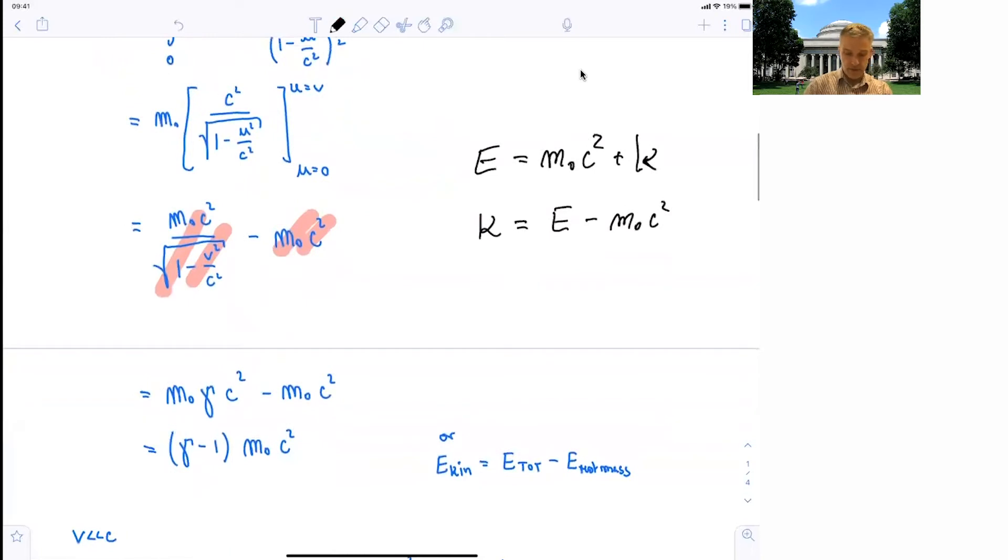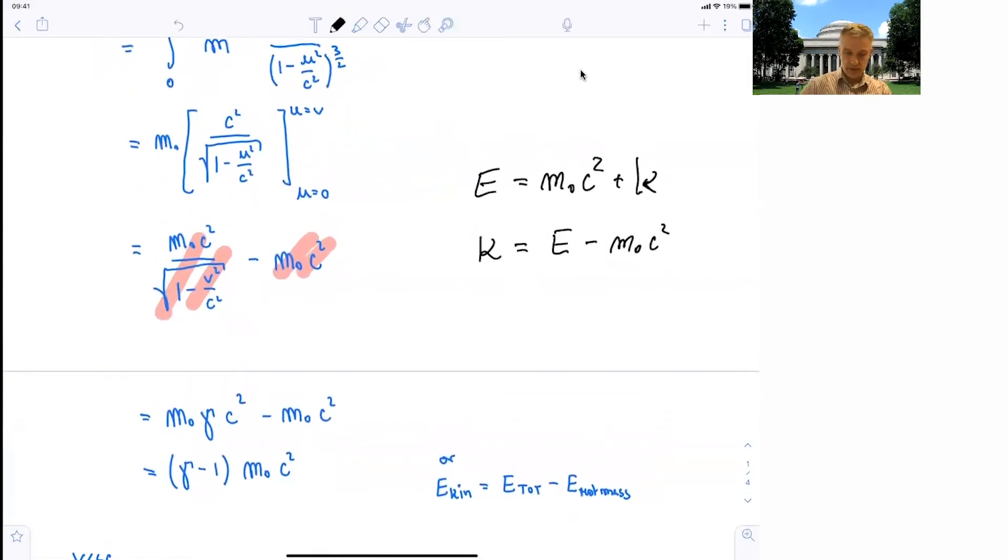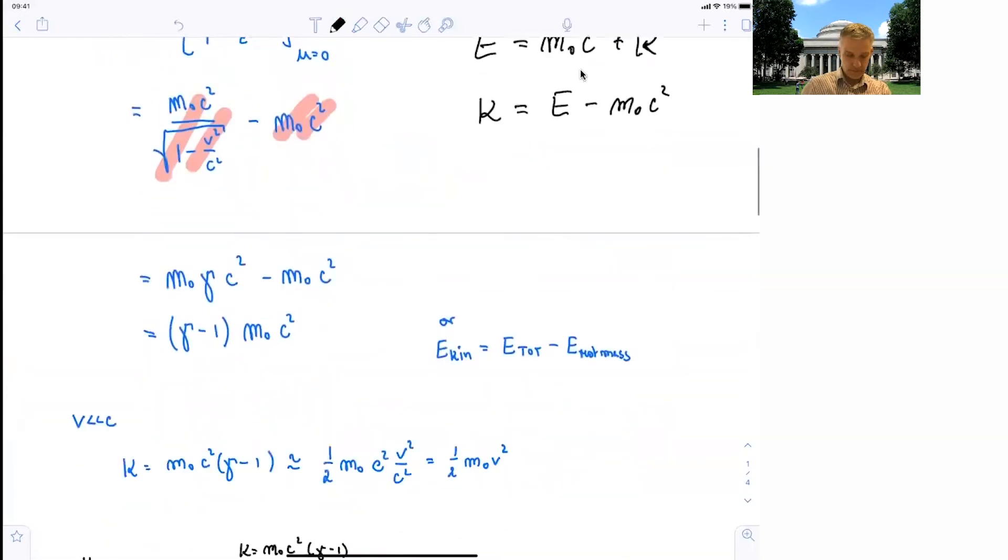Or you can simplify this by saying the kinetic energy is gamma minus 1 times m0 c squared.